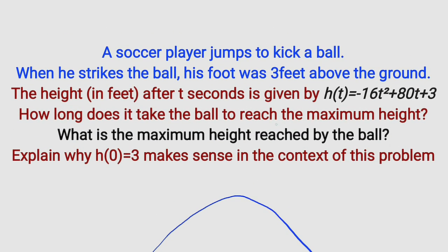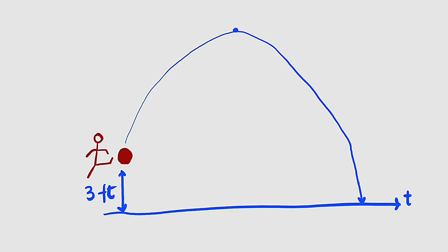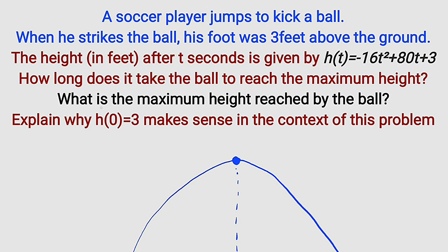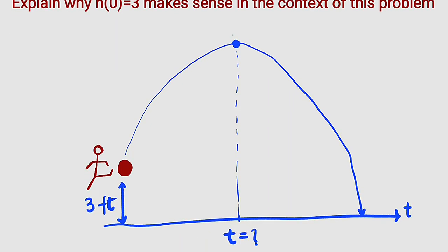We're going to call this t instead of x because it is a function of time. Let's go through the question again. The first question asks us to find the time taken for the ball to reach the maximum height. This is the maximum height, and the time taken to reach it will be at the equation of the line of symmetry. So we want to find the value of t at this point. Then we are asked to find the maximum height the ball reached. The maximum height will be the corresponding value of h. So the point here, let me draw the h axis. We want to find t at this point, likewise h.